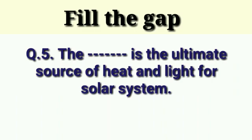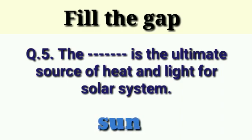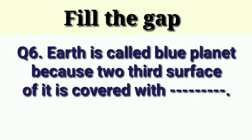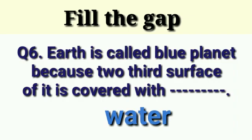Answer is: sun. Next question: Earth is called the blue planet because two-thirds of its surface is covered with dash. Answer is: water.